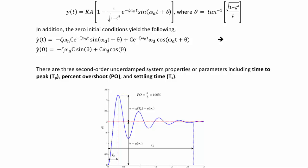In addition to y(0) = 0, we also have ẏ(0) = 0. This gives −ζωₙc sin θ + cωd cos θ = 0, and we can use this condition to solve for θ.